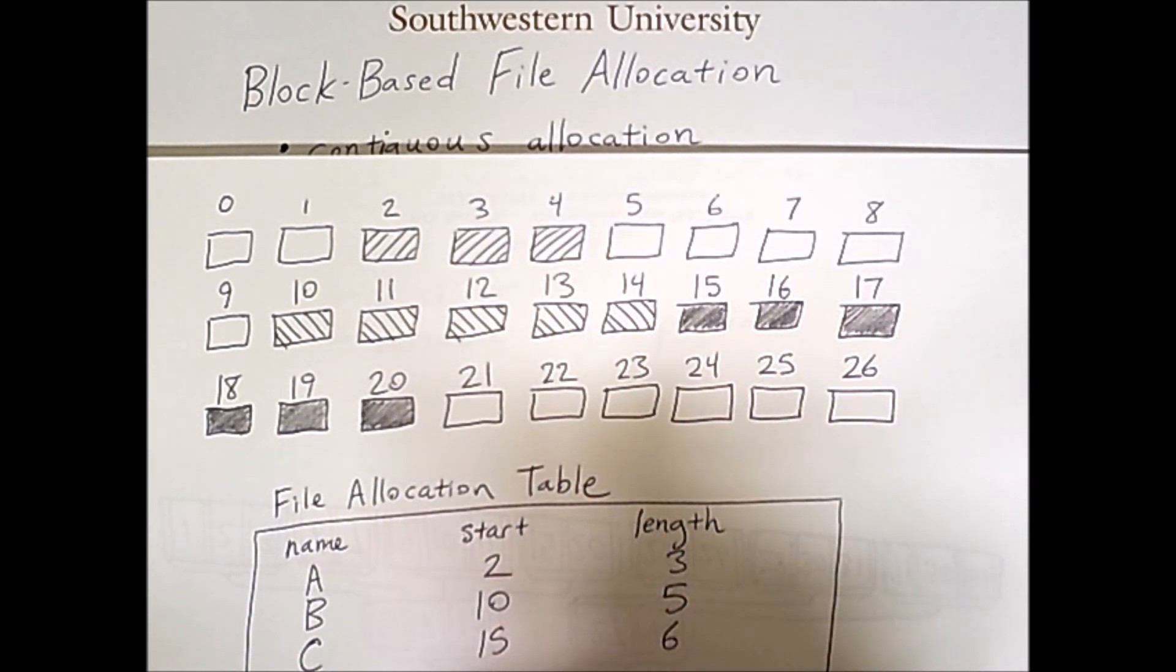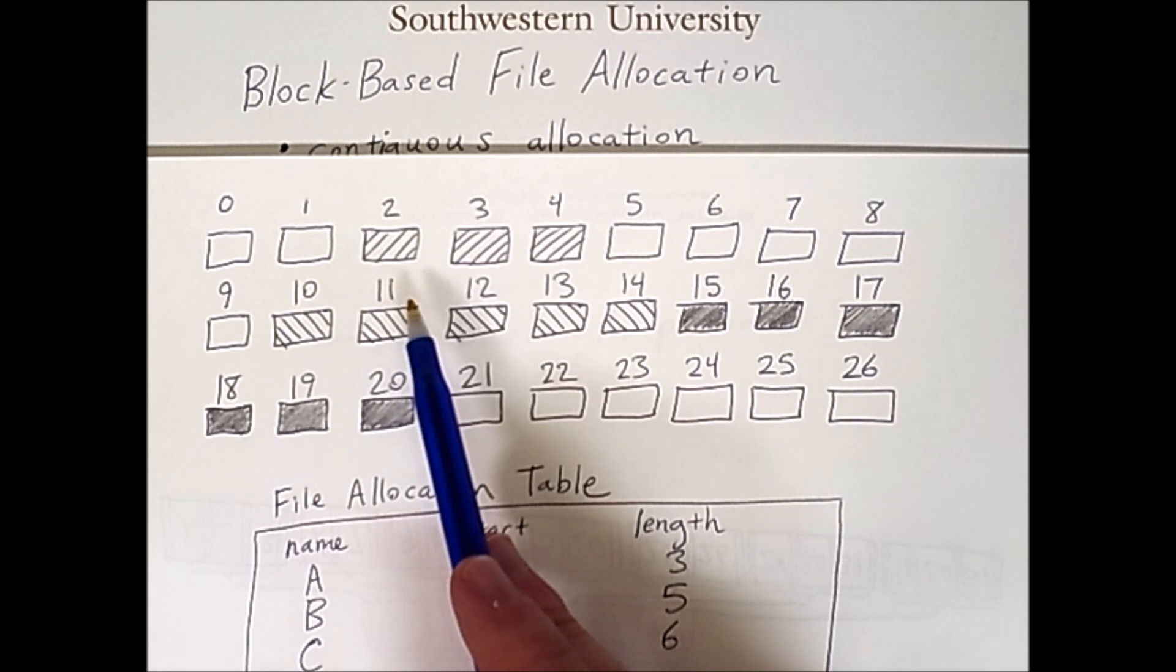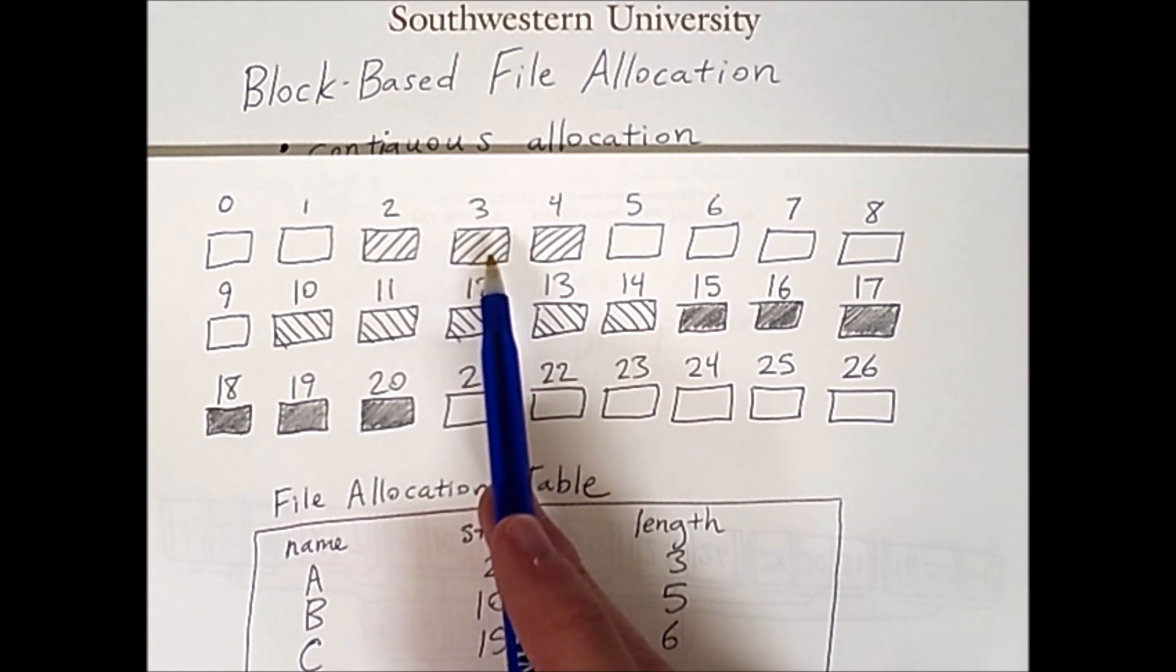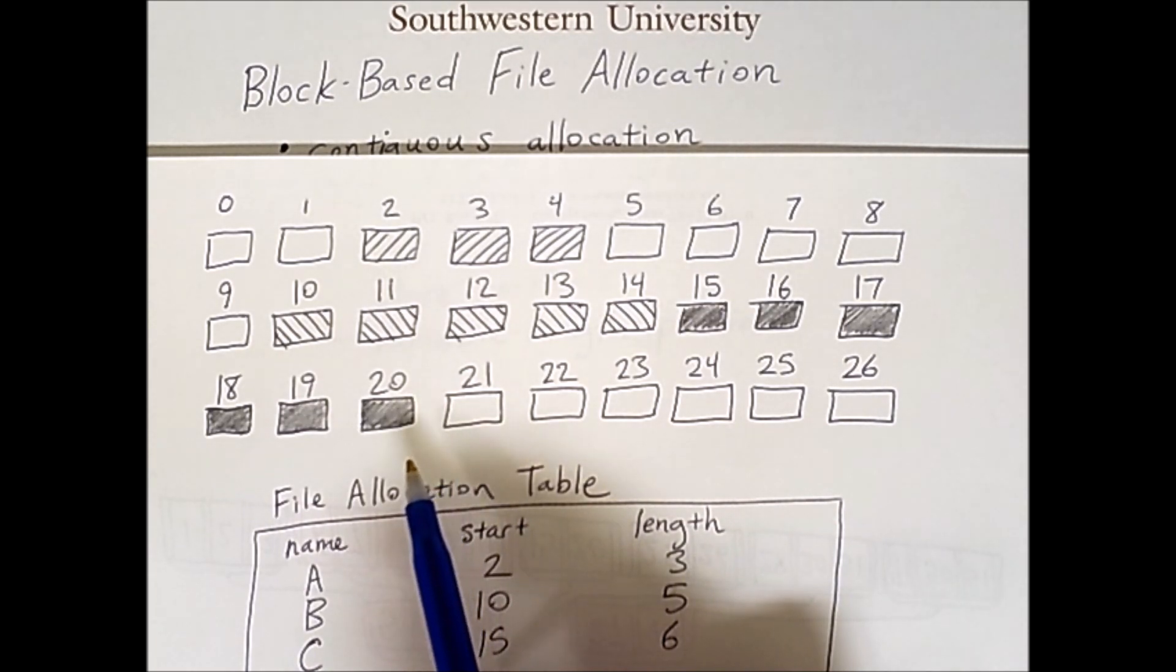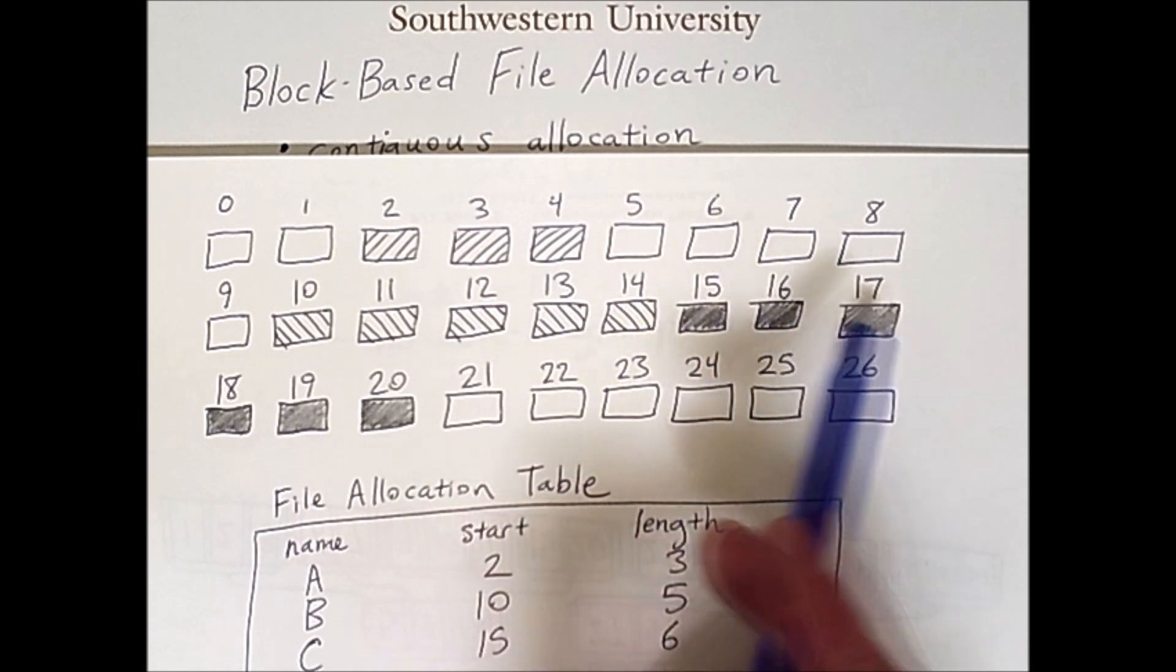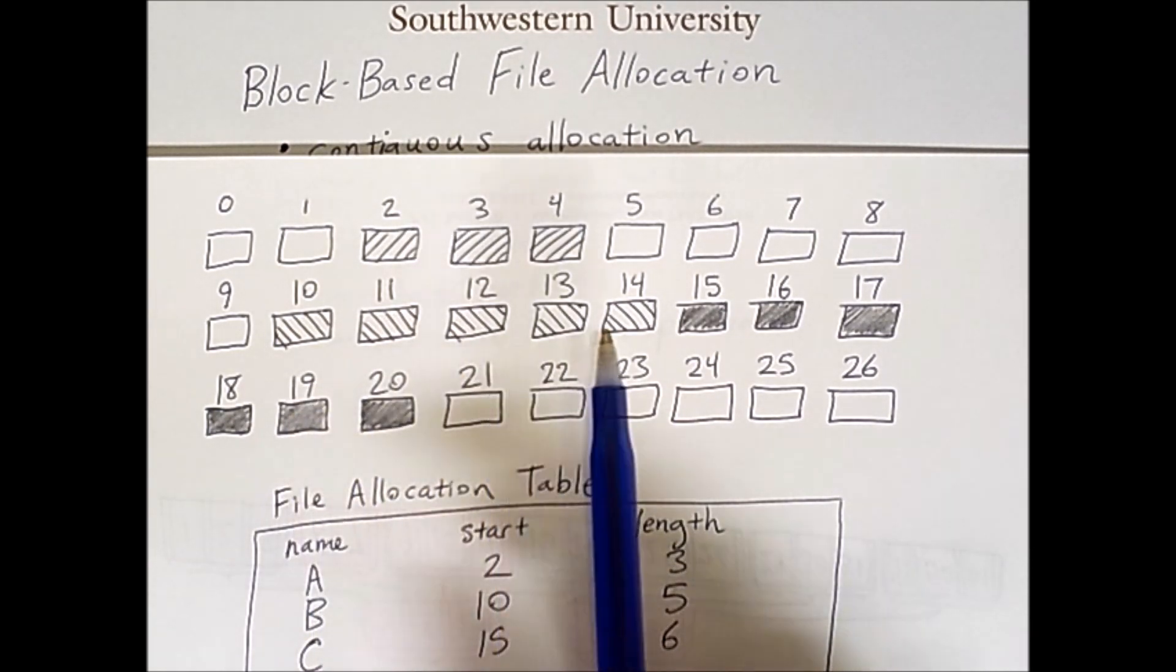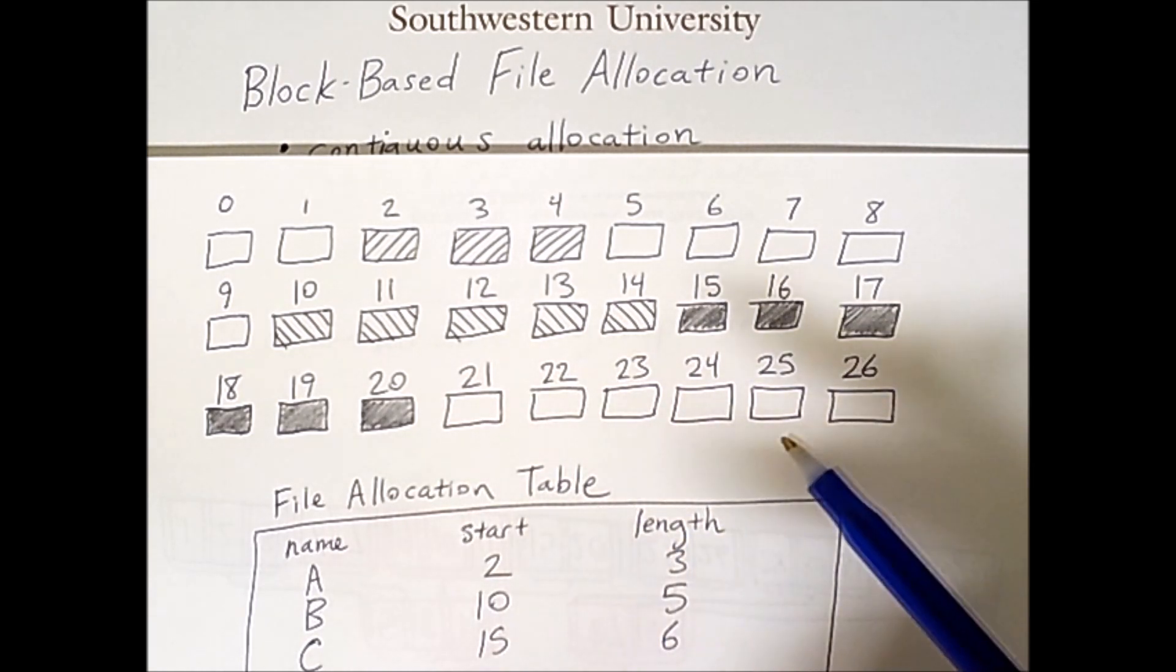Now the nice thing about contiguous allocation is that the blocks are located next to each other on the disk. So the blocks for this one file can be read in quickly in sequence as could these blocks and could these blocks. So reading the disk is fairly quick. Unfortunately we have these periods of blank space. That's because sometimes files get removed. So even if you initially start by having each file allocated directly after the previous file and therefore have a very compressed memory you're eventually going to have gaps as you delete files. In other words the disk will become fragmented.